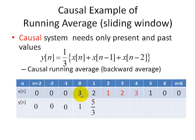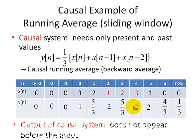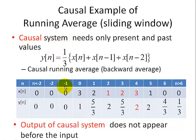At n equal 2, we get a value of 2. For n equal 3, we have 2, 1, 2 giving 5/3. At n equal 4, we again get 2 — colored red to show how this output is computed from the present input and two past values: 1+2+3 = 6, divided by 3 equals 2. Notice that the output sequence does not appear before the input sequence — it's all 0 before n equals 0 — and that's why this is called a causal system. The present value and the two past values create this causal system, and the output does not appear before the input.